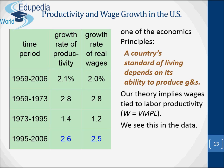A Luddite is someone who opposes technological progress. Luddites argued in the 1980s that policymakers should restrict the spread of computers and word processing software to protect the jobs of typewriter repair technicians. Most students will readily agree that such a policy would have been a huge mistake. The productivity gains from computers and word processing software far outweighed the welfare losses of workers displaced from the typewriter repair industry. Moreover, this change created other kinds of jobs, such as technicians who charge $100 per hour to recover data from Windows crashes, spyware, and virus attacks.